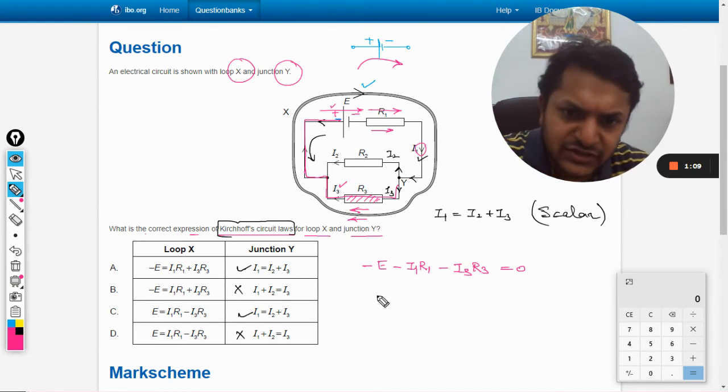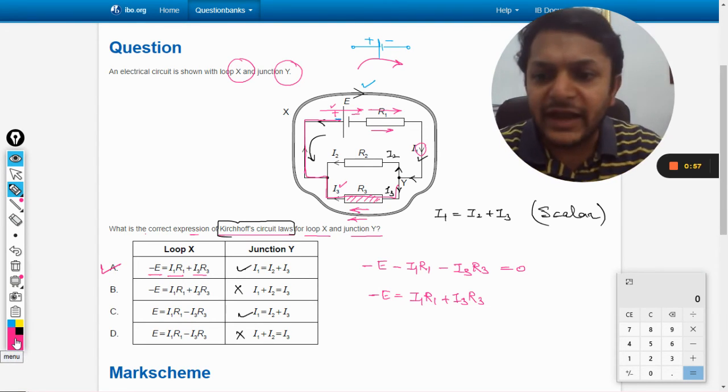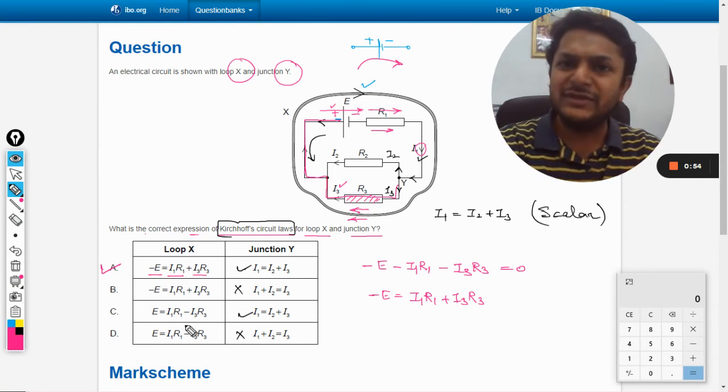Let us see which is the right answer. Okay, so there is an equal sign here. i1·R1 plus i3·R3 is equal to minus E. Yes, A should be the right answer and we need not go into B, C, D.